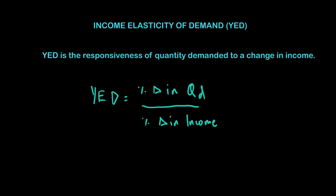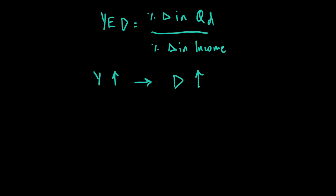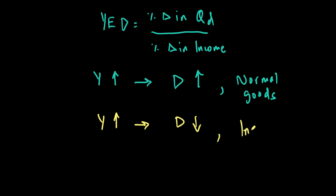We are looking at how demand for goods changes when income goes up or down. We know that if income goes up, for some goods demand also goes up. In an earlier discussion about factors affecting demand, we saw that whenever income goes up, demand for some goods rises. We call those goods normal goods. On the other hand, inferior goods are those where when income goes up, demand actually goes down.